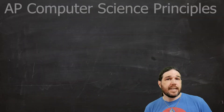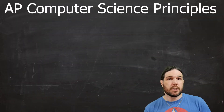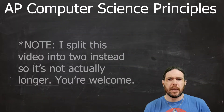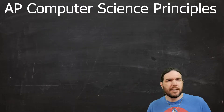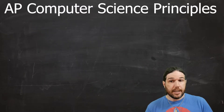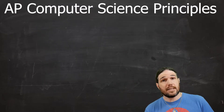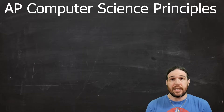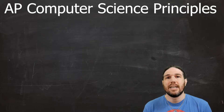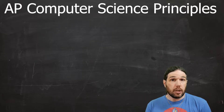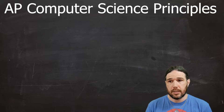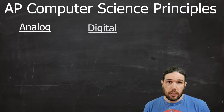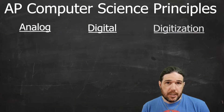Hello class, welcome back to AP Computer Science Principles. Today's video is going to be a little bit longer because I'm going to try to define, in a way that makes sense, three words that are really critical to understand in this class, but that can be a bit of a struggle to figure out. Those words are analog, digital, and digitization.